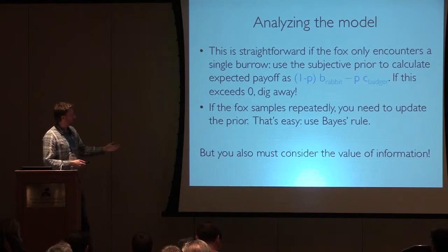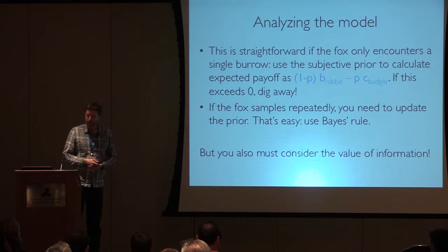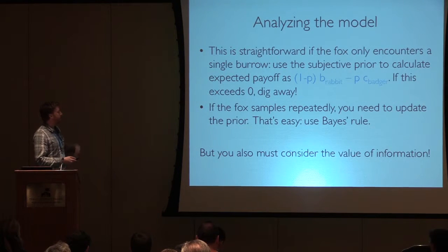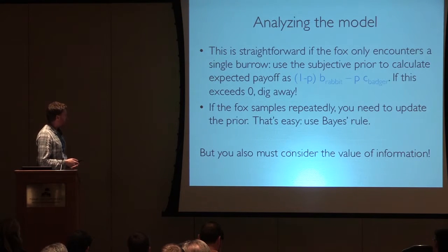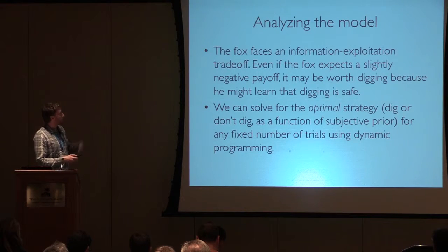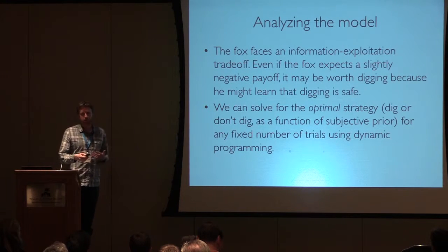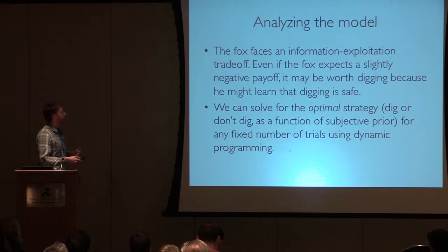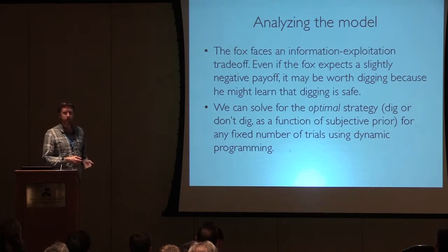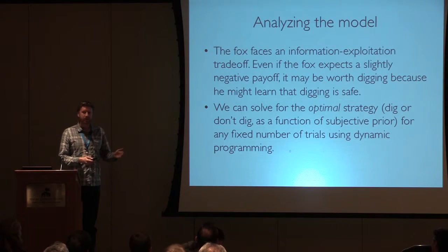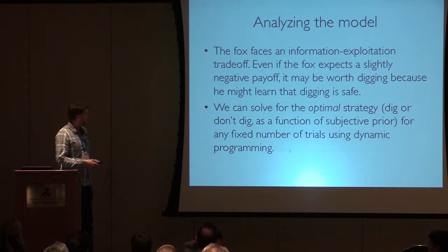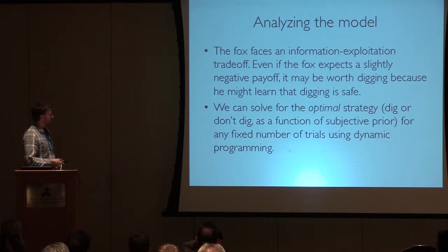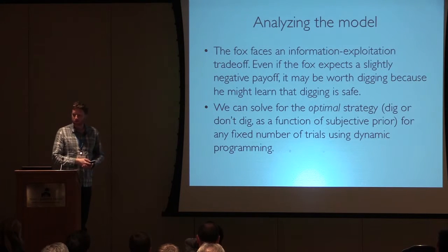To analyze this model: if the fox is only going to explore one burrow, it has some prior probability about how likely the world is to be bad — maybe half the time foxes are in environments where badgers are common, half the time where badgers are rare. That gives it a probability of encountering a badger versus a rabbit, and we can calculate the expected payoff for exploring a burrow. The optimal behavior is to explore when the expected payoff is positive. If the fox samples repeatedly, learning comes into play — it needs to update its prior probability after each burrow, and also take into account the value of information, since this is an exploration-exploitation trade-off. We can deal with this using dynamic programming to solve for what the optimal behavior is.